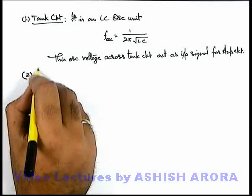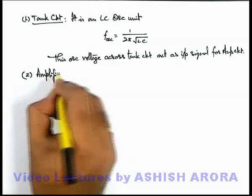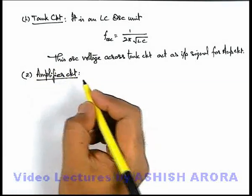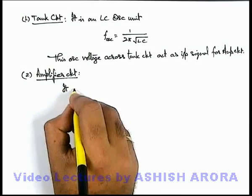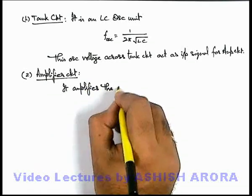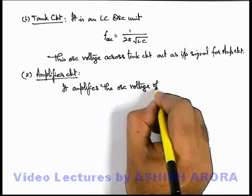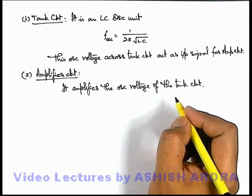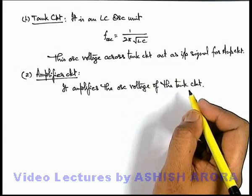The second part is the amplifier circuit in the oscillator. It is a normal common emitter amplifier and it amplifies the oscillating voltage of the tank circuit, because the tank circuit is connected at the input end of the transistor — that is, across the base-emitter junction.